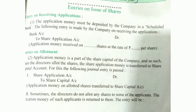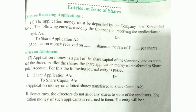Now let's come to the journal entries — how the journal entries are to be done when the company receives applications. The entry on receiving the application is: Bank Account Dr. to Share Application Account. Whatever the number of shares received by the company, it is multiplied by the application amount per share — not the full share value per share. For example, if the company calls rupees 2 on application, that amount per share is used. I explained the concept of application, allotment, and calls in my previous videos — if you have any doubt, you can refer to those.